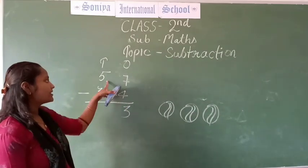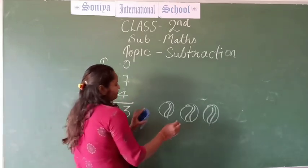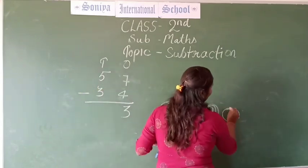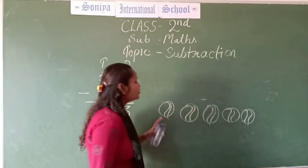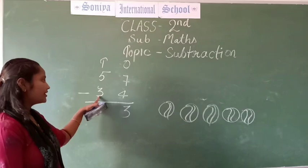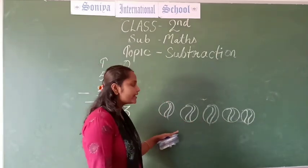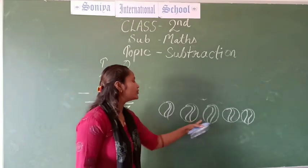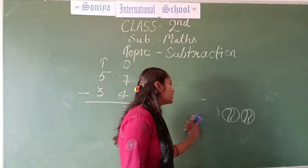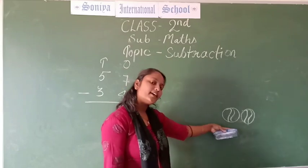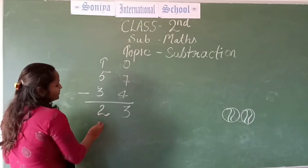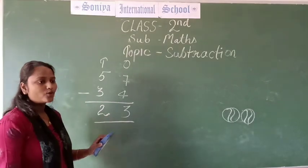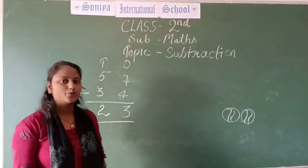Same process. This is 5. So we are drawing 5 balls. 3 balls are already there, so we are making 2 balls more: 1 and 2. So 5 are total there and the smaller number is 3. So we take away 3 balls: 1, 2, 3. How many balls are left? Only 2 balls are left. So we write 2. Our answer will be 23. 57 minus 34 is 23. I hope you all are learning.